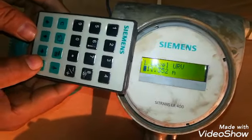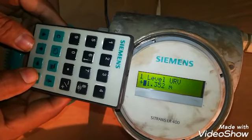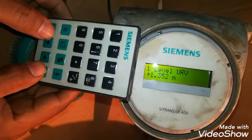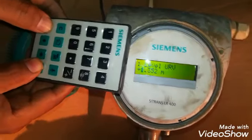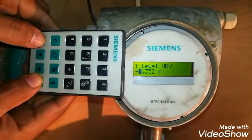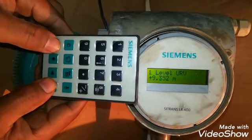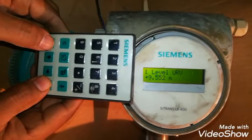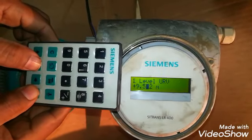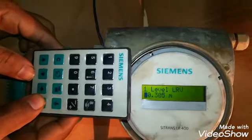URV, that at which value I want the 20 milliamps. I can change it as per our requirement, below 10 meter, 9 meter, 8 meter, where I want I can take 20 milliamps. So at that height it will show maximum level. I will make it 9.5 meters.